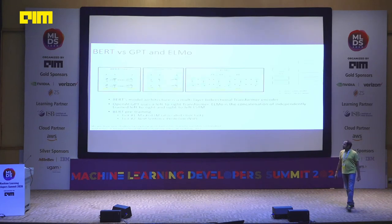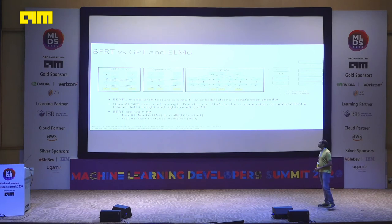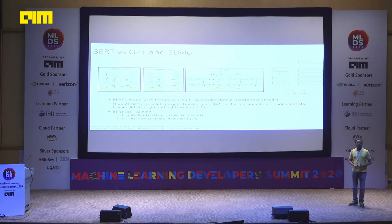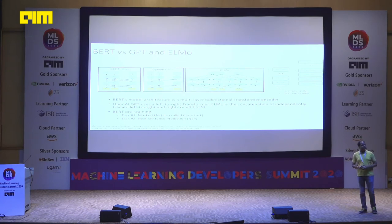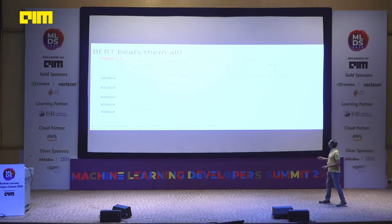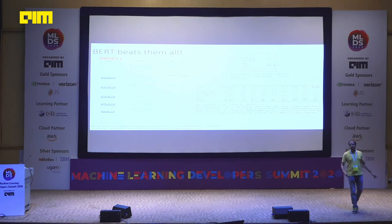BERT beat down all scoreboards. Multiple papers came saying 'I use BERT to achieve better accuracy on this task.' After BERT, other models came like GPT-2, from various companies all competing to top leaderboards. TransformerXL came and said: let's combine recurrence, attention, and really significant depth. They proposed TransformerXL and on top of that XLNet. Meanwhile Microsoft came up with their own MTDNN — multi-task deep neural network model.